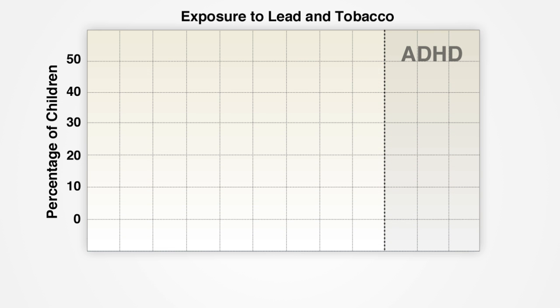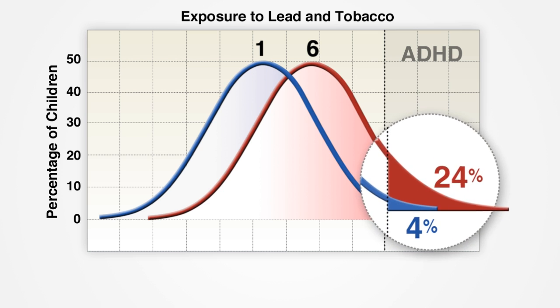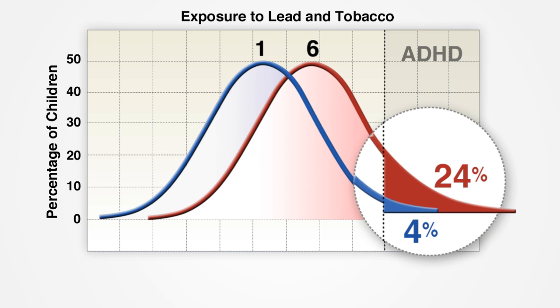A child who has low lead exposure and wasn't exposed to tobacco typically exhibits one ADHD symptom. In contrast, a child who has higher lead exposure and was exposed to tobacco exhibits six symptoms. Four percent of children who have neither exposure have ADHD,